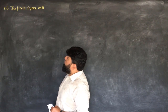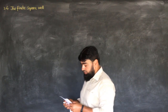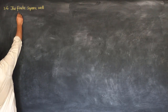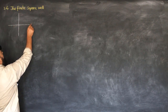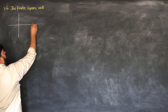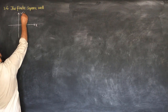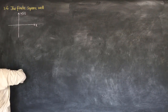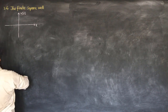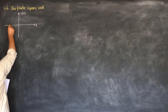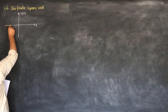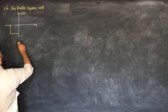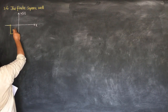In section 2.6 we will discuss the finite square well. Along the x-axis we have the potential v(x). The well starts from a point where the potential is 0, then drops to its maximum value of minus v-naught, and it is symmetric along both sides.